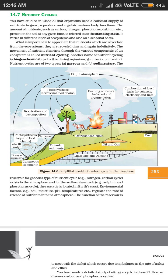Wherever a nutrient is being used, it must come from somewhere. In the entire ecosystem there will be a point — a reservoir — where this particular nutrient is present in the largest amount, and from that point it is supplied to other points. If the reservoir for a nutrient is in the atmosphere, it is called a gaseous cycle. If the reservoir is in rocks or inside the earth, it is called a sedimentary cycle.